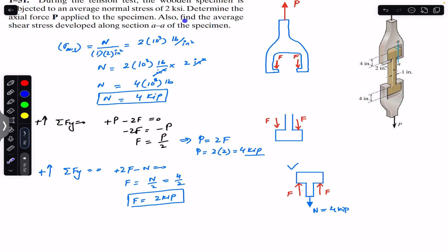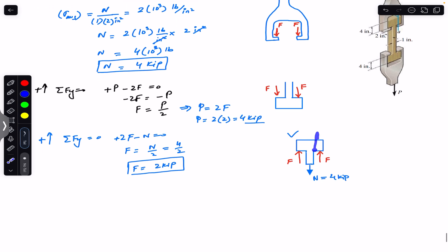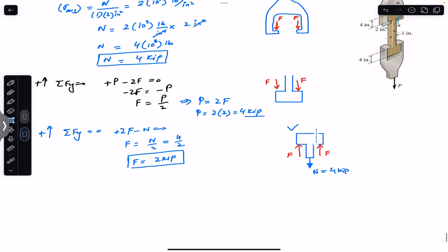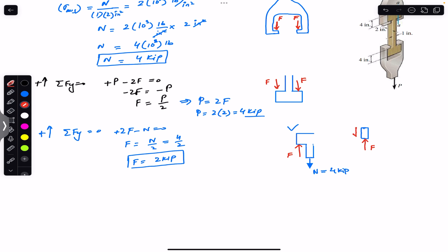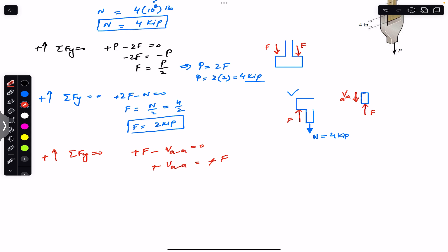Now we are asked to find the average shear stress developed at section AA. We pass a cutting section at AA and consider the resulting free body diagram. The shear force V_AA acts downward while force F acts upward. Applying equilibrium: F − V_AA = 0, so V_AA = F = 2 kips.